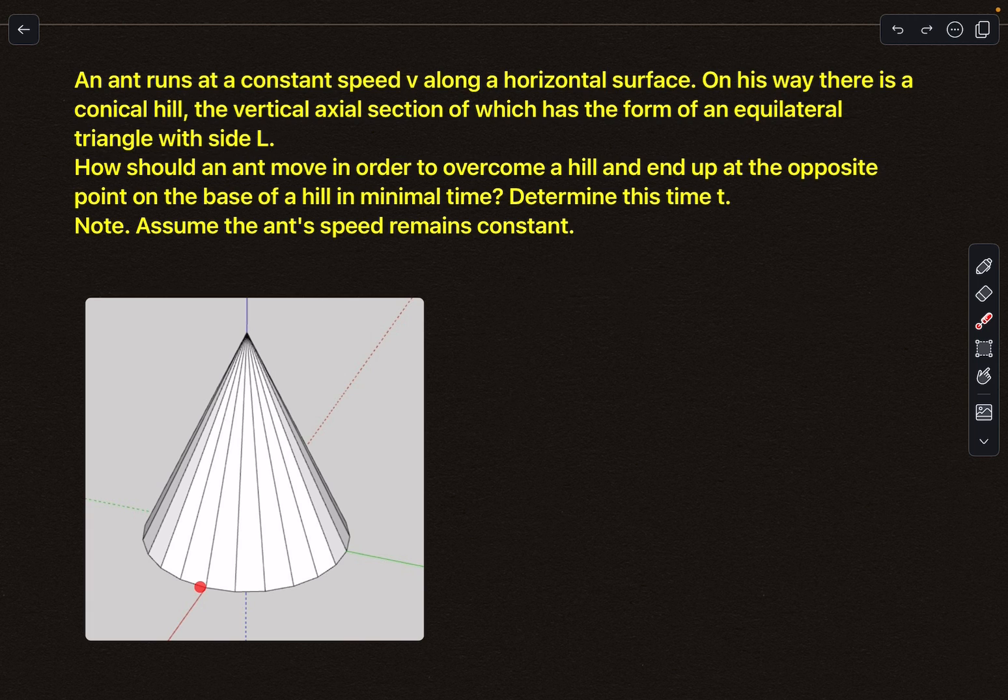There are multiple possibilities here. This might be the worst one: the ant goes straight up to the top of the hill and then climbs down to the opposite point. There's another possibility that the ant can go along the circumference of the base circle, and then there's a possibility something like this. There are multiple possibilities.